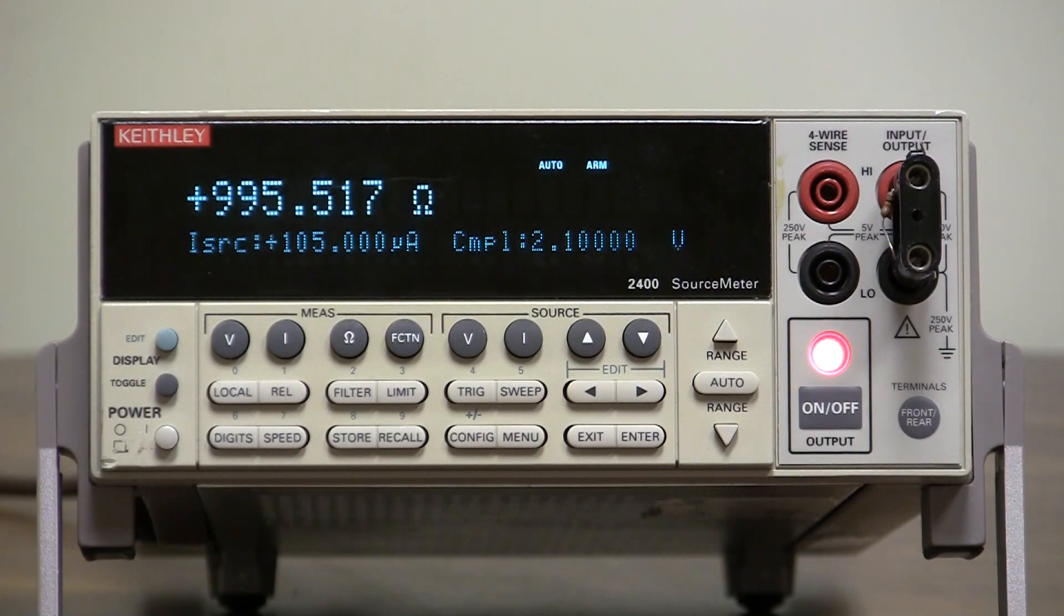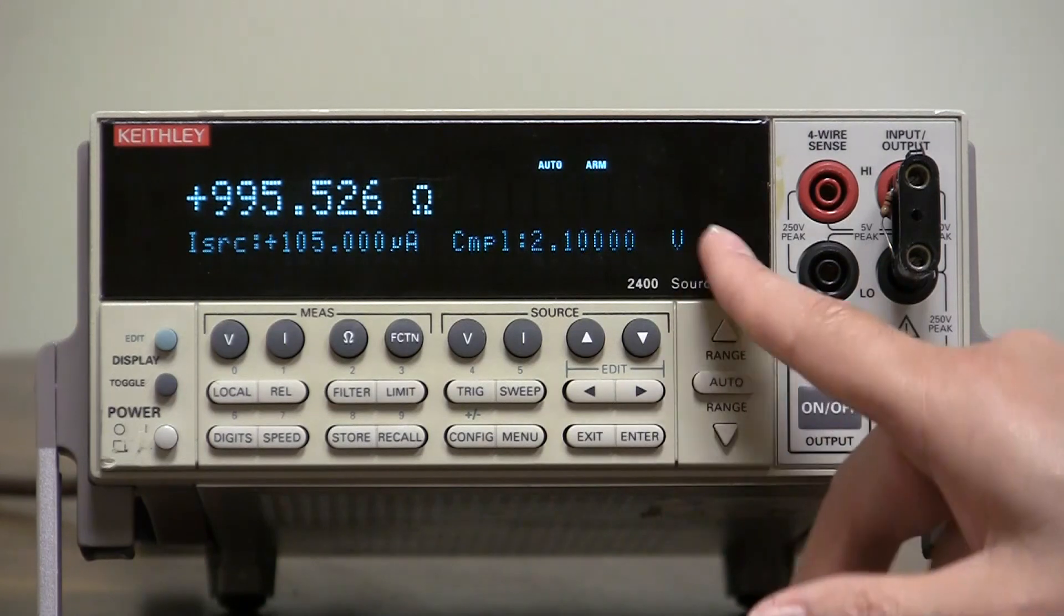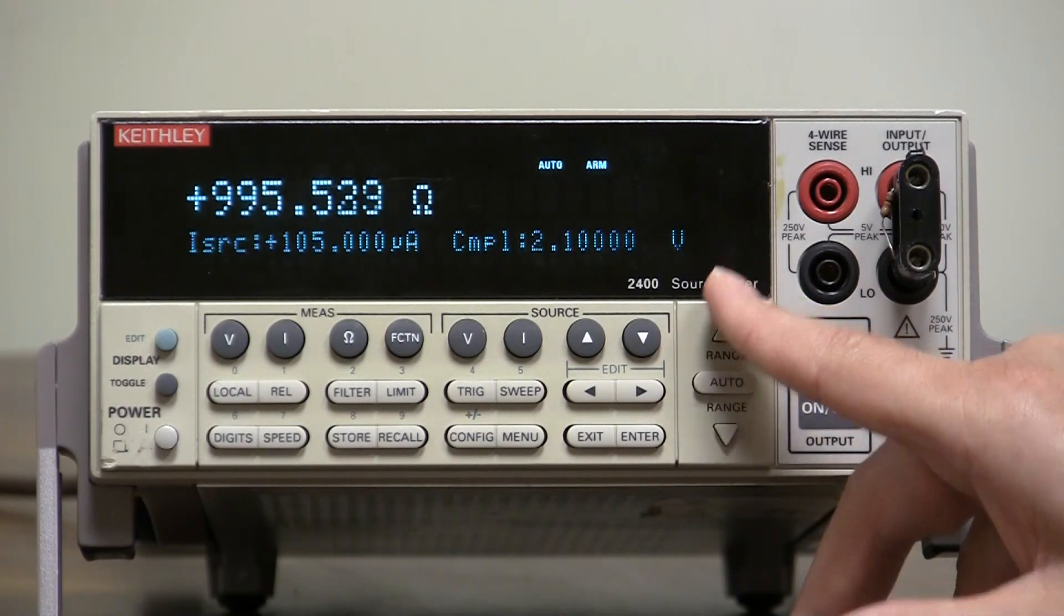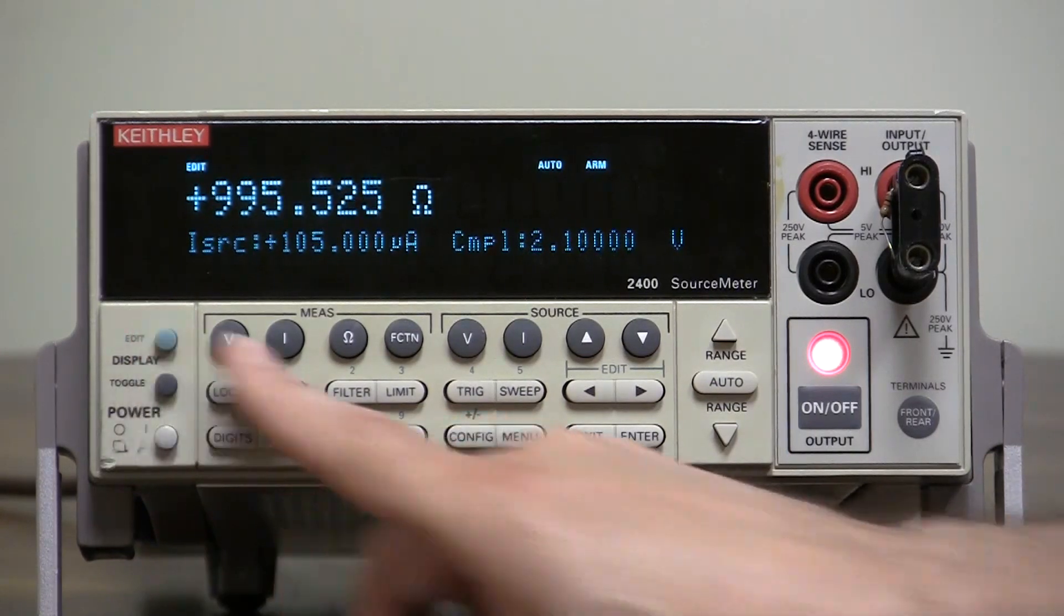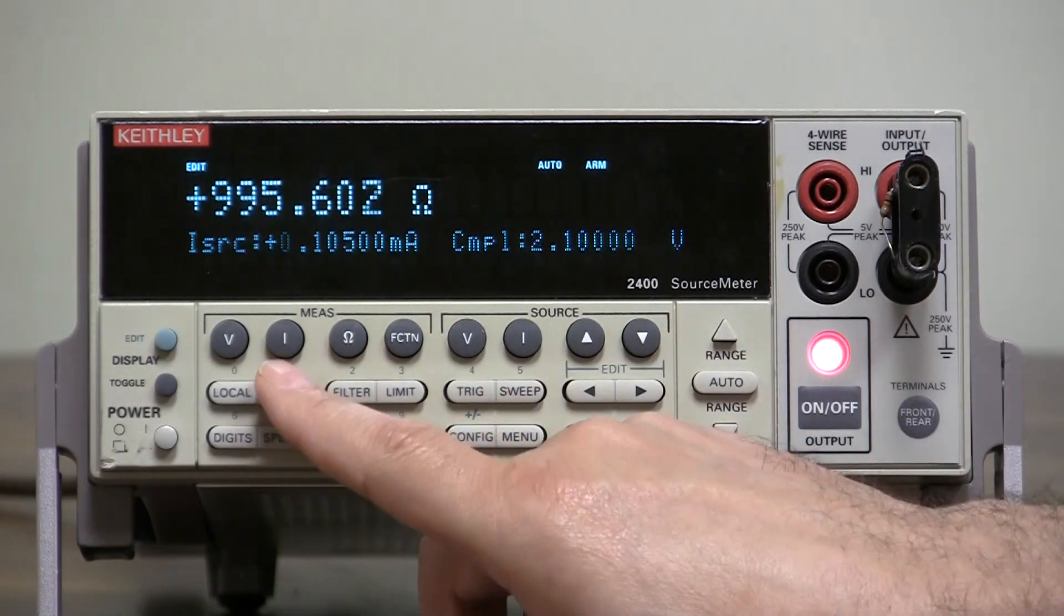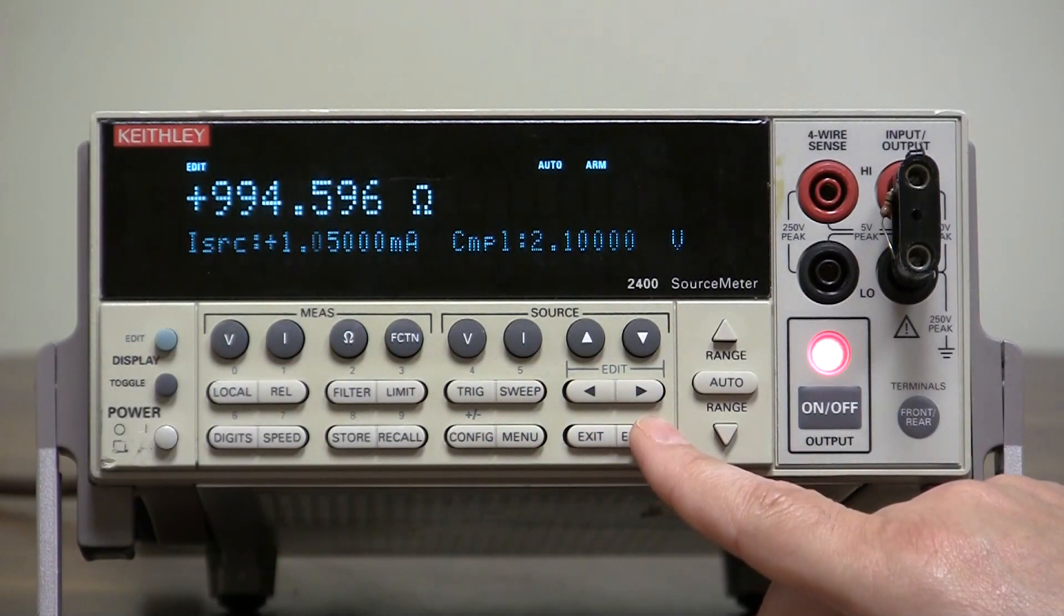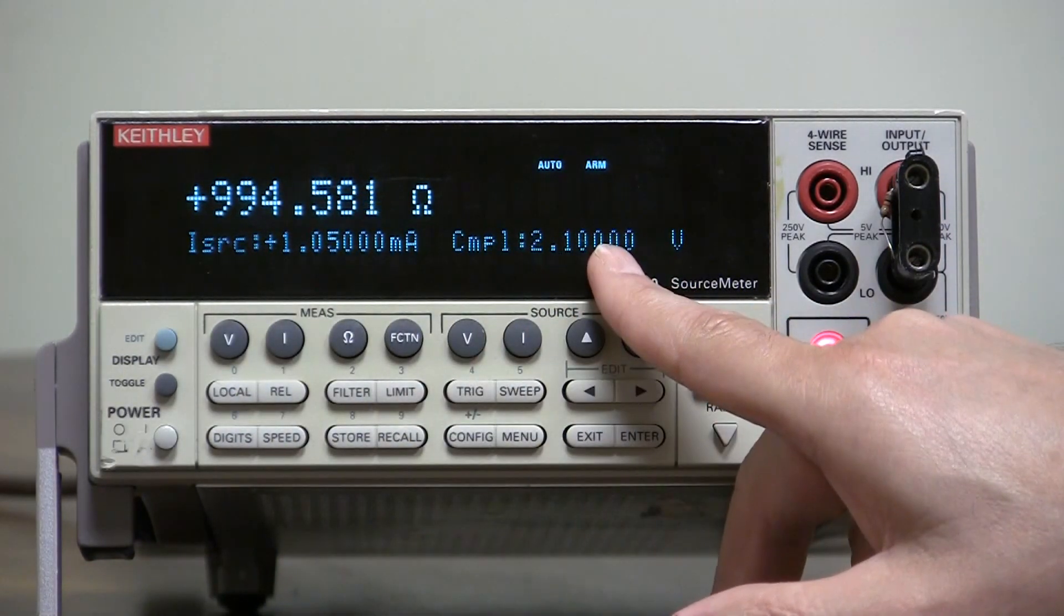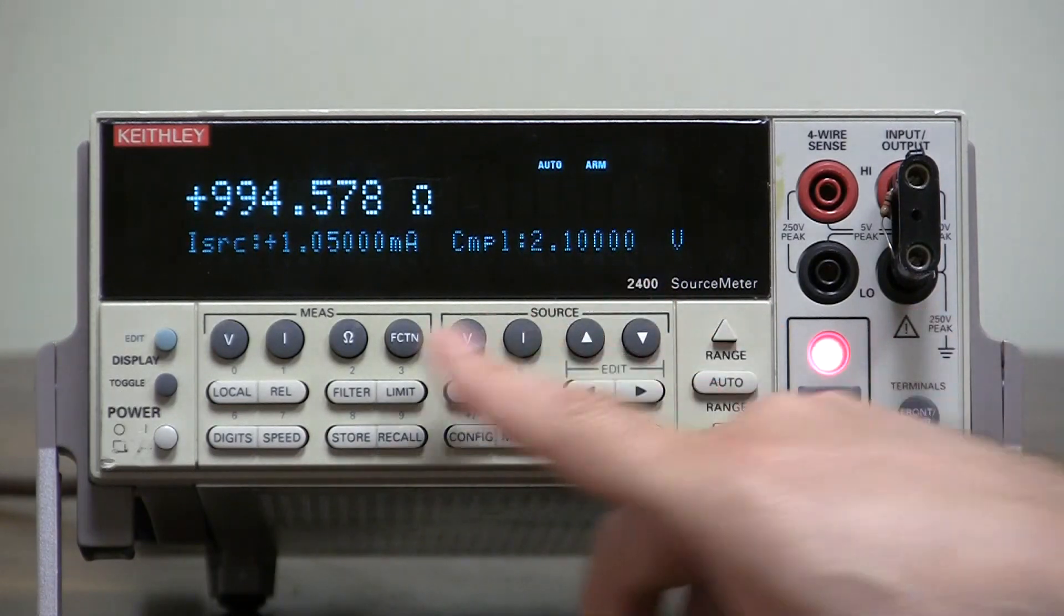Now, let's show range compliance. Range compliance is when this guy is going to flash because the measurement range is incorrect. So, let's go up to 1 milliamp. Okay. So, now it's still fine. 1 milliamp up to 2.1 volts could only be 1 volt.